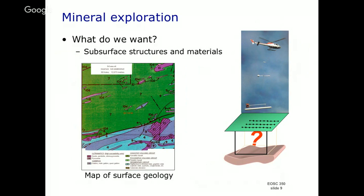Here's the geologic map. There are certain things happening — some outcrops here, a fault coming in, very distinct rocks here compared to there. What you'd actually like to do is figure out what's underneath the ground, and to do that you're going to need some kind of a geophysical survey.